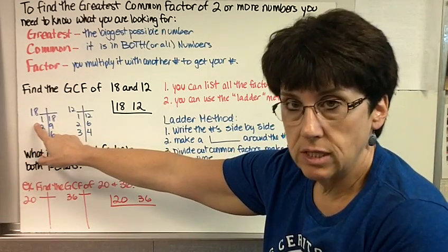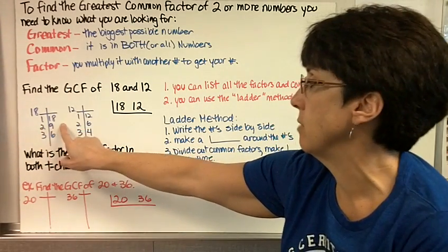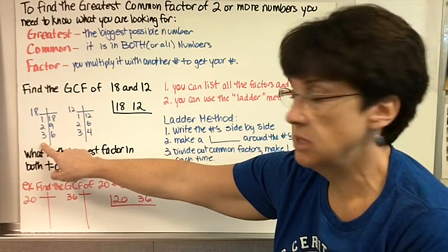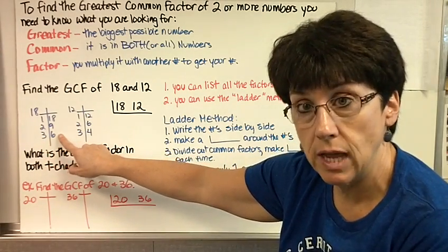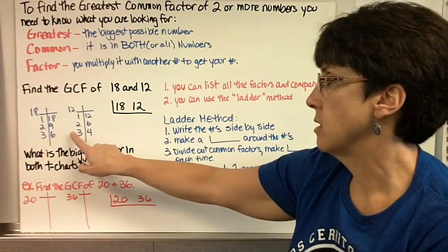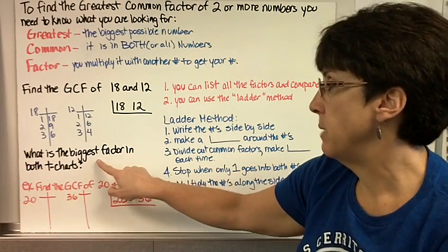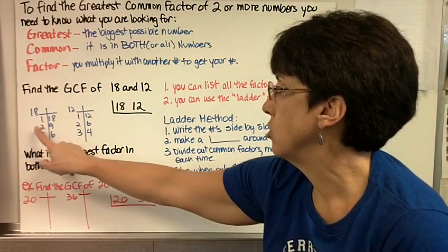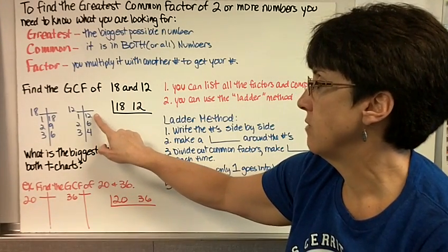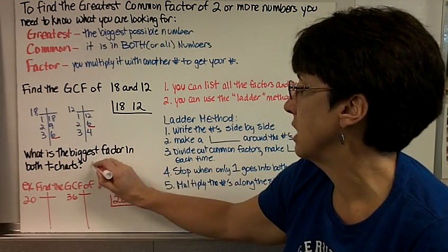So for 18, I'm going to list all the factors in my T-chart. I said 1 times 18. Does 2 go in? Yes, it's an even number, 2 times 9. Does 3 go in? Yes, 3 times 6. Does 4 go in? No. 5? No. 6? Yes, because 2 and 3 did, but we already have 6 written down. So we're done. Let's do the factors for 12. 1 times 12. 2 times 6. 3 times 4. Does 4 go in? Yes, and we have it written down, so we're done. So what is the biggest factor in both T-charts? 1's in both. 2's in both. 3 is in both. 6 is in both. So the biggest one in both of these is the 6. So the greatest common factor is 6.